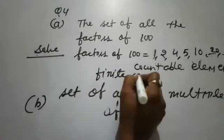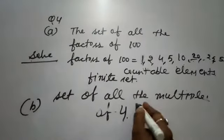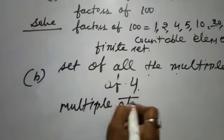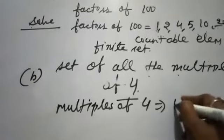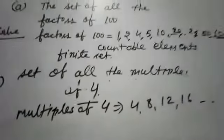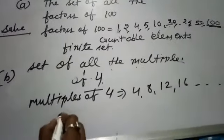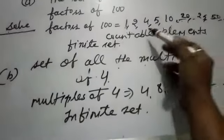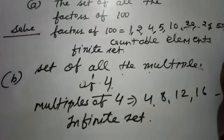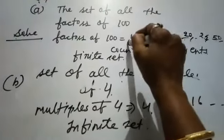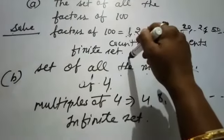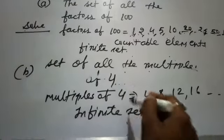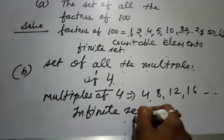Part B is the set of all multiples of 4. Here, the limitation is not given and there are infinitely many multiples of 4. So we cannot count the number of elements — this is an uncountable set, and we say this is an infinite set. In part A, we can easily count — 1, 2, 3, 4, 5, 6, 7, 8, 9 elements — so it is finite. But in part B, there are infinite multiples of 4 with no limit given, so it is an infinite set.